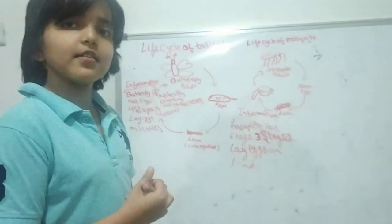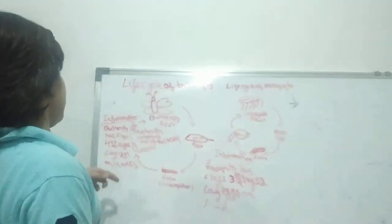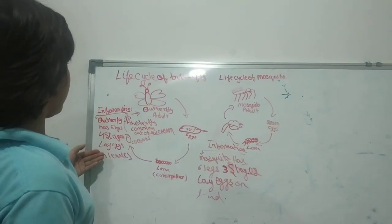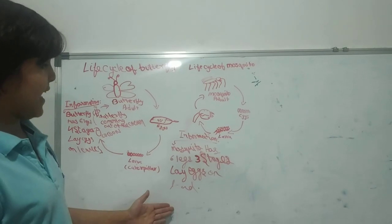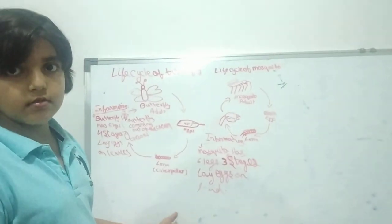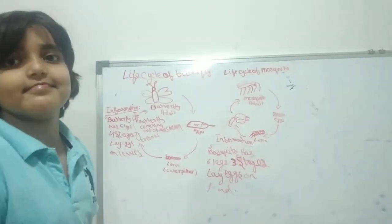So what are the stages? Stages in its life cycle. Yeah, okay. So butterfly lays eggs on leaves and mosquito lays eggs on land. Okay. Anything else? No. Okay, thank you. Welcome.